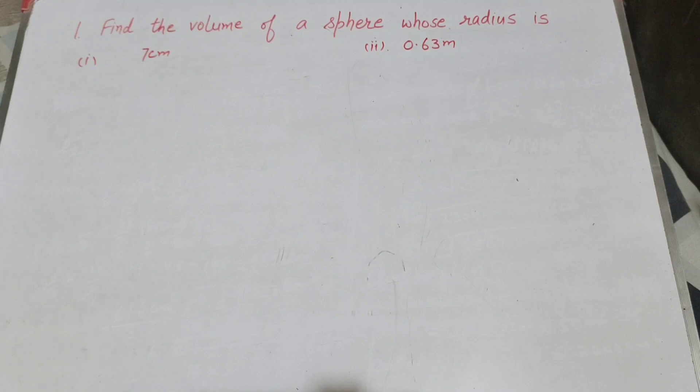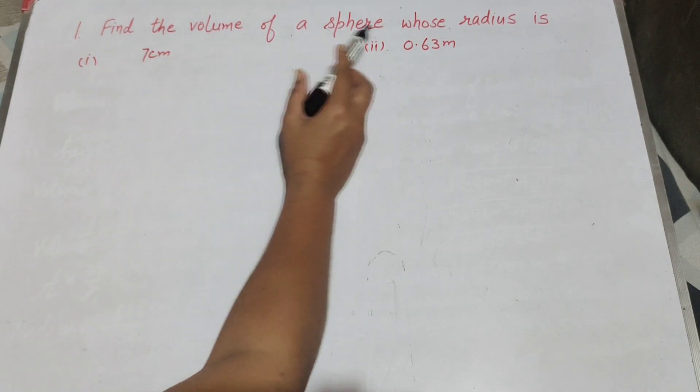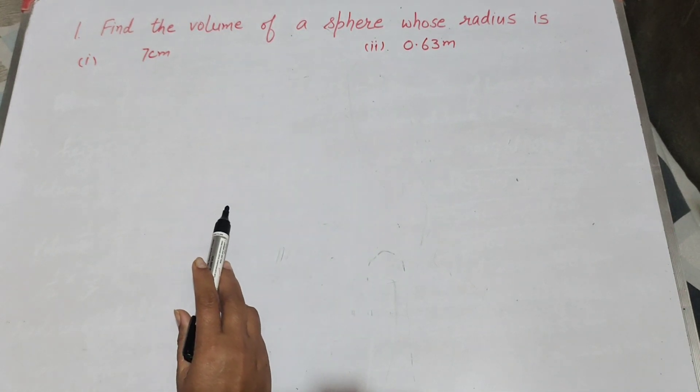Hello friends, welcome to my channel. In this video we discuss the question: find the volume of a sphere whose radius is 7 cm and 0.63 m.